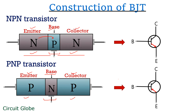We can see the symbolic representation of the two types of transistors. The direction of the arrow shows the direction of flow of current through the transistors. In case of NPN transistors, the current flows from collector to emitter terminal, and in case of PNP transistors, the current flows from emitter to collector terminal.